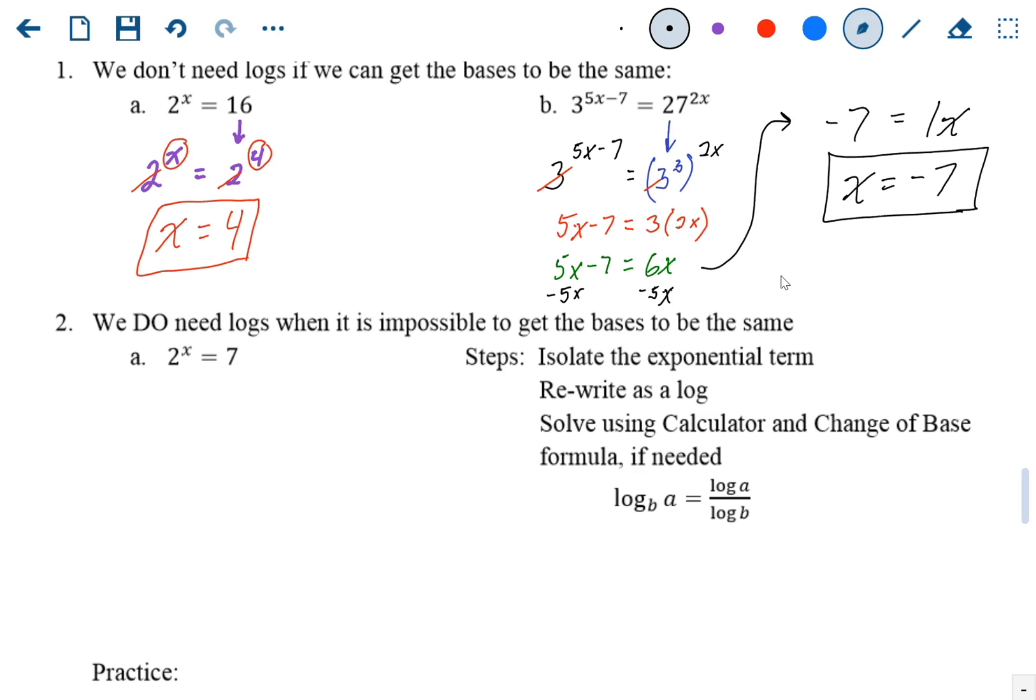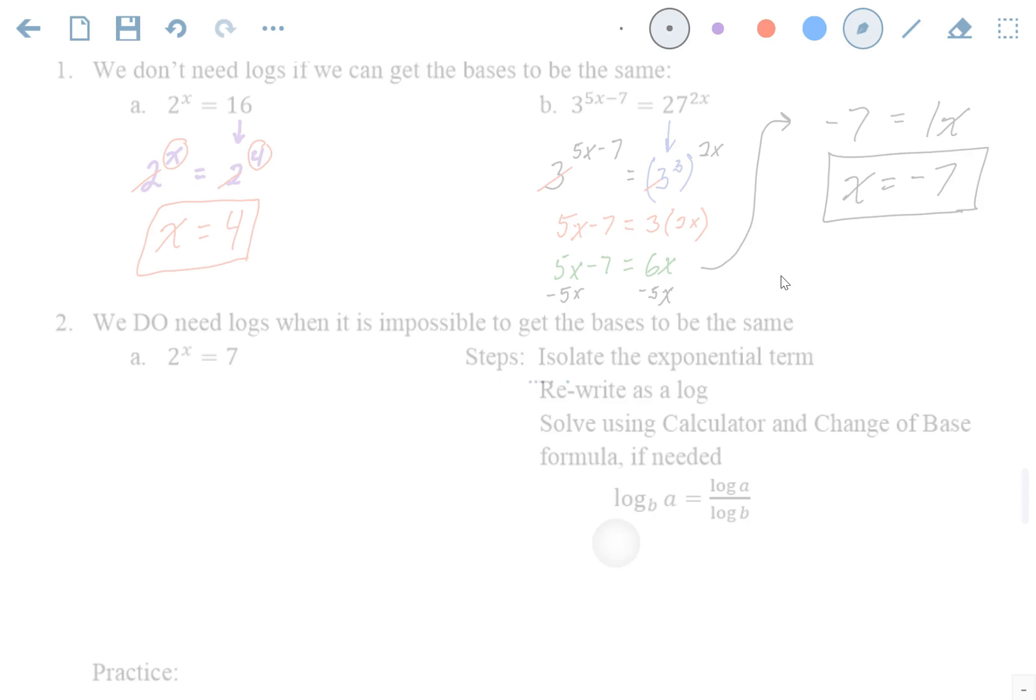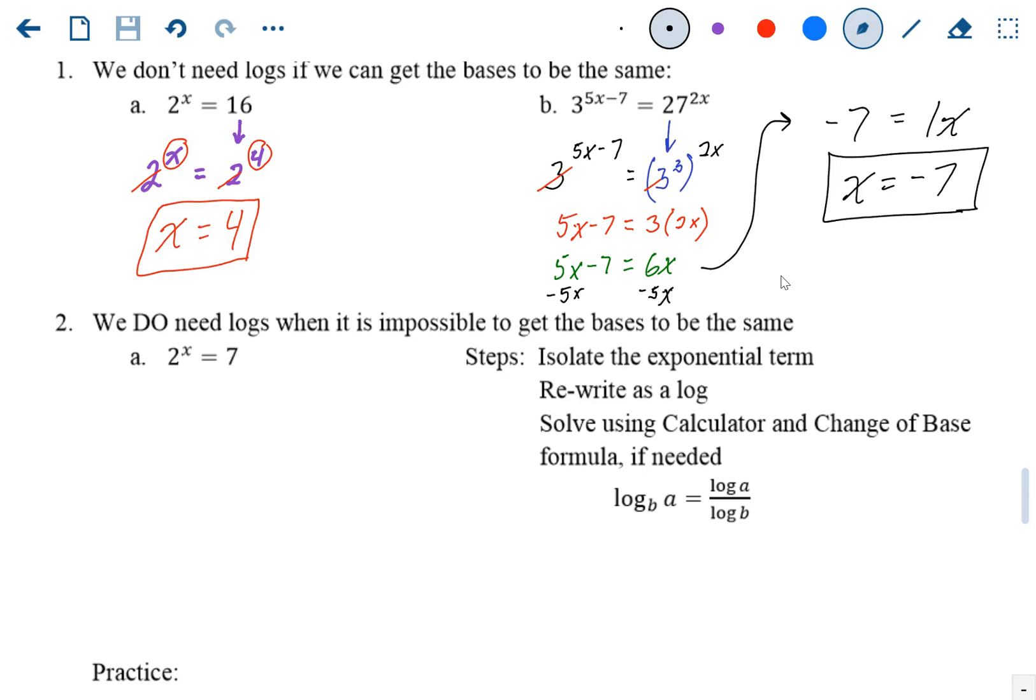All right, so this one: 2 to the x power equals 7. There's no way of rewriting 7 to become a base of 2. So we go through the steps. Isolate the exponential term. The exponential term, 2 to the x power, is already isolated. Step two: rewrite it as a log.